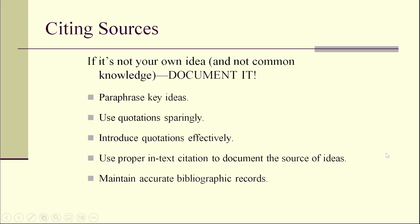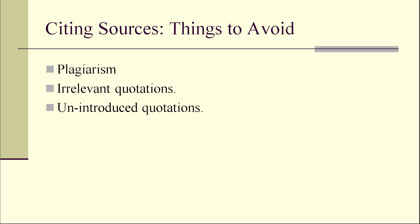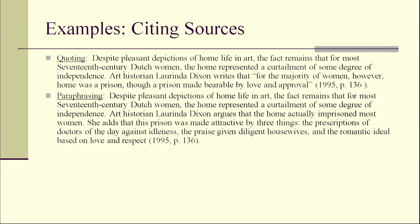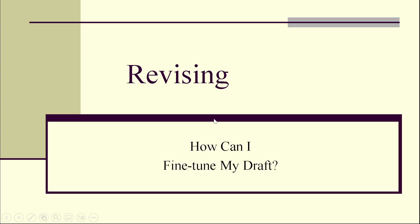When citing sources, you can paraphrase key ideas, use quotes, introduce quotations effectively, use proper in-text citations to document the source of ideas, and maintain accurate bibliographic records. Avoid plagiarism, irrelevant quotations, and unintroduced quotations. These are examples of citing when you double-quote. Paraphrasing means restating the statement of a certain author in your own words in order to avoid plagiarism.